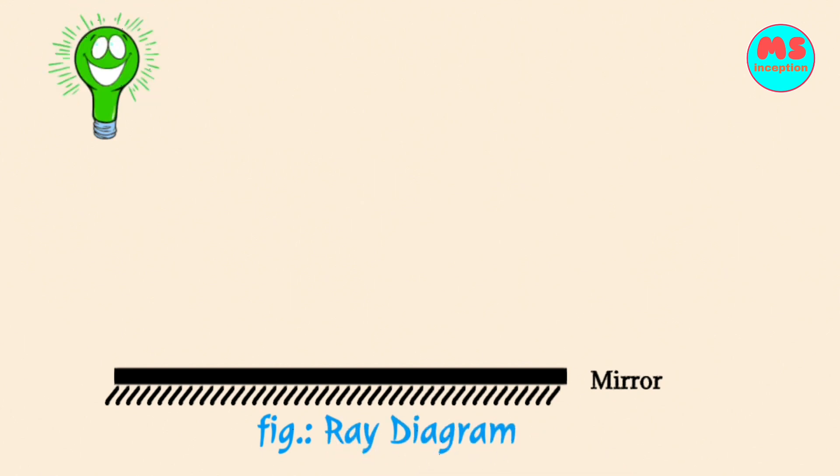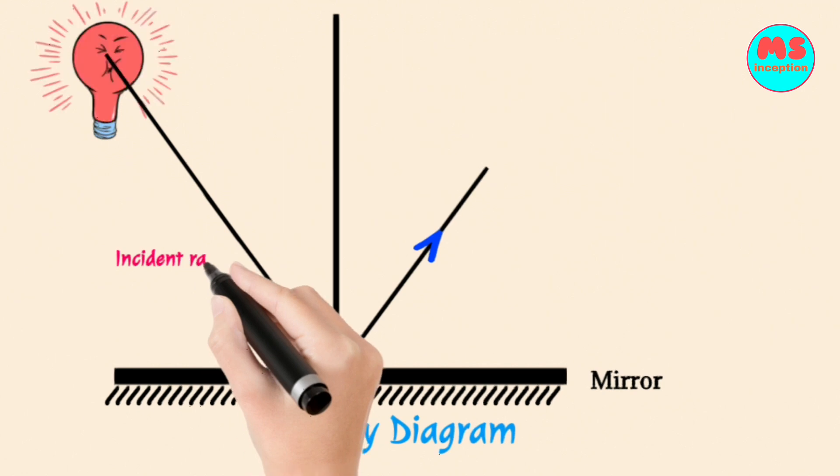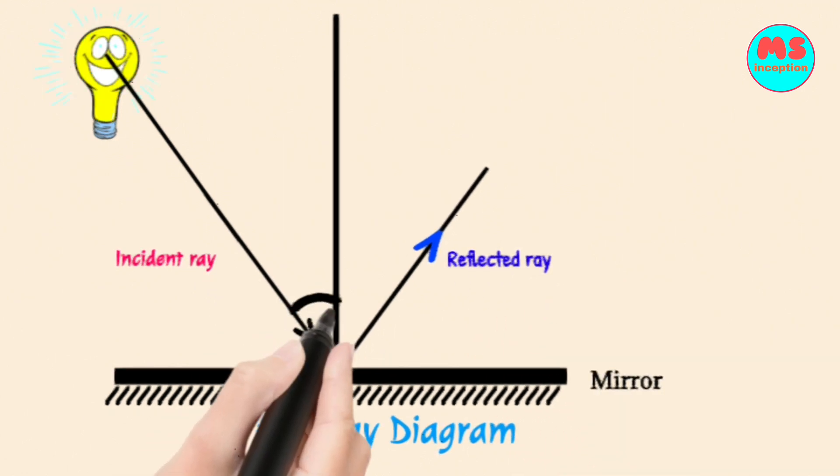In this figure, a ray diagram is shown with the incident ray, reflected ray, and normal to the plane mirror surface. Where I is the angle of incidence and R is the angle of reflectance.